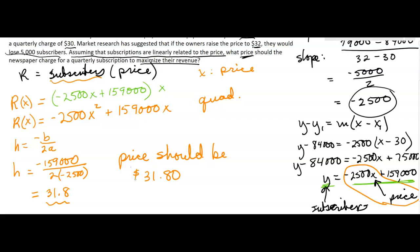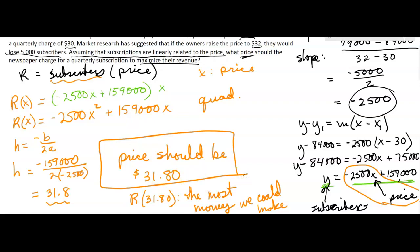Now you could figure out how many subscribers that is and how much money you would make. You'd have to plug it into your formula. So r of 31.80, that would represent the most money we could make. I think they figure that out in the book, but the question doesn't ask it. The question just says what price should we charge, and there it is.